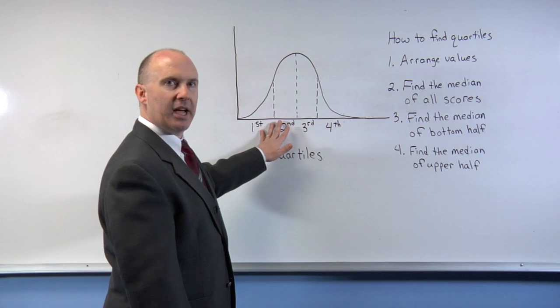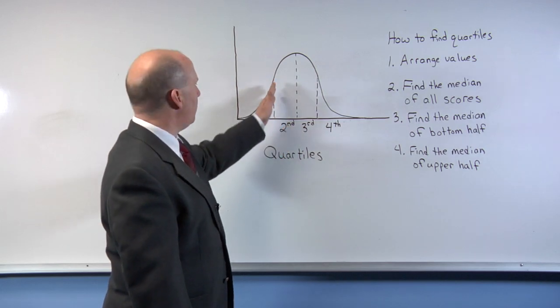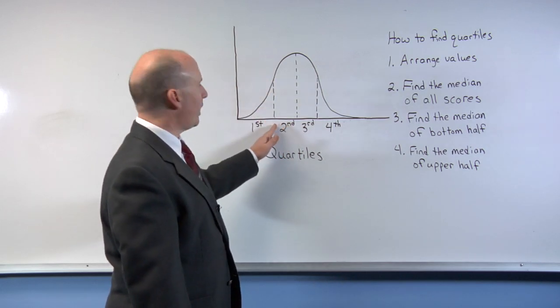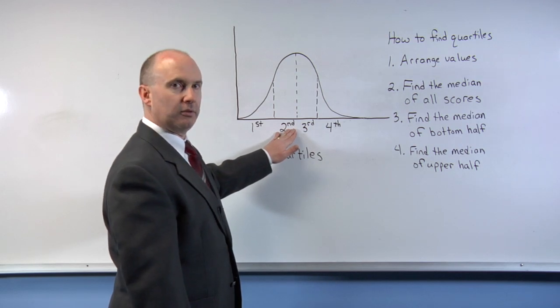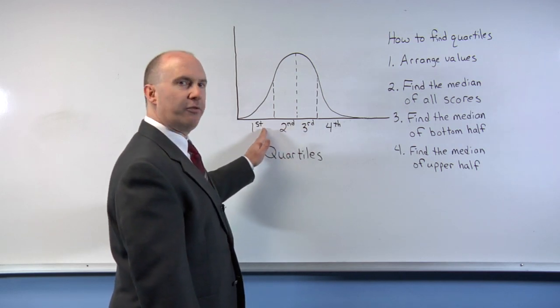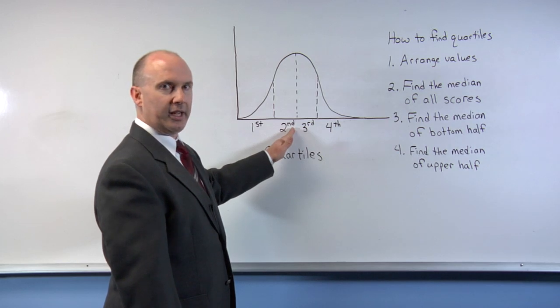If you take a look at the bottom half and find the median, you essentially break that into one group and one group of equal number. In fact, this would be one-fourth of all the data, and this would be one-fourth of all the data.